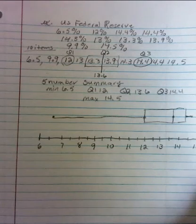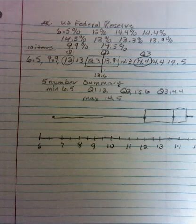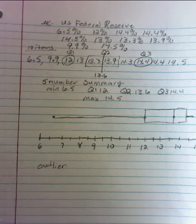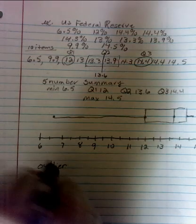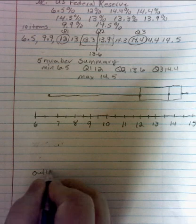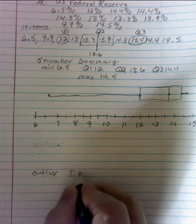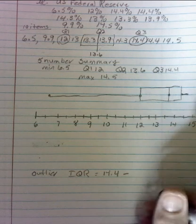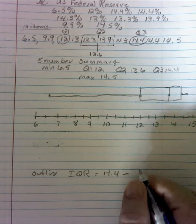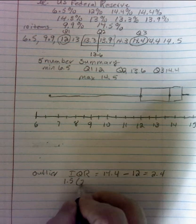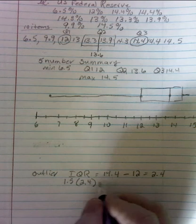So there's our box and whisker plot for those federal reserve percentages. Now let's look and see if we have any outliers because we have this very long whisker it is very likely that we might have an outlier on that lower end. I'm going to move this down just a little bit and give myself some room here so I want to do the interquartile range which will be quartile 3, 14.4 minus quartile 1 which is 12 and so that is 2.4 and so 1.5 times 2.4 it's going to give me the value of 3.6.